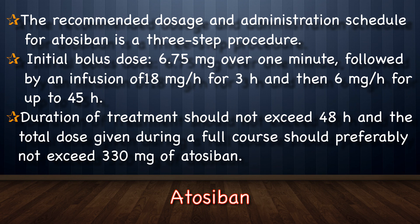Atosiban, an oxytocin antagonist, represents an advance in available tocolytics and should be considered a first-line agent for spontaneous preterm labor. It is licensed in Europe but not available in India and not approved in the United States. The dose schedule is an initial bolus of 6.75 mg over 1 minute, followed by an infusion of 18 mg per hour for 3 hours, then 6 mg per hour for up to 45 hours. Treatment should not exceed 48 hours and total dose should not exceed 330 mg. Only minor side effects like nausea, headache, and allergic reactions have been reported.